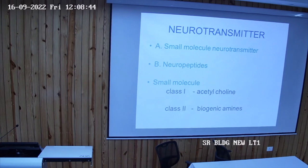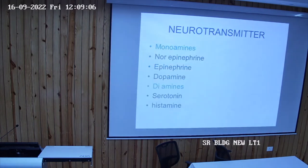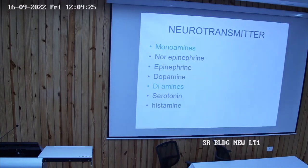Small molecule neurotransmitters are further subclassified into four subcategories. Class 1 contains only acetylcholine. Class 2 contains biogenic amines, which can be monoamines or diamines. Monoamines include norepinephrine, epinephrine, and dopamine. Diamines include serotonin and histamine.